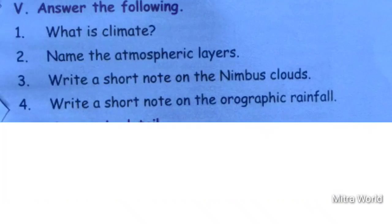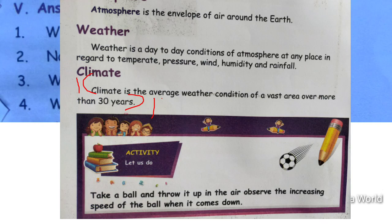Next: answer the following. First question — what is climate? Children, take page number 172. Climate is the average weather condition of a vast area over more than 30 years. This is the first question answer.